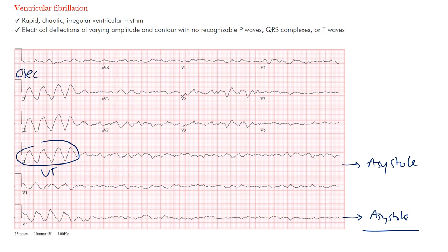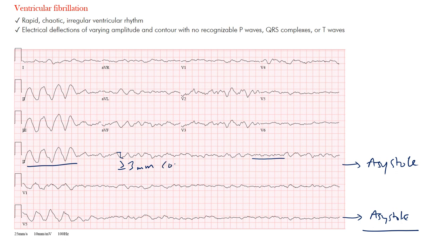Ventricular fibrillation — what are some of the mechanisms? It's not fully understood, but it's likely multiple wavelets or something called mother rotors. Notice the amplitude from VT versus areas of v-fib. If the amplitude is greater than or equal to three millimeters, we call that coarse ventricular fibrillation. If it is less than three millimeters, we call it fine v-fib. These are nuances that won't change much of the management.